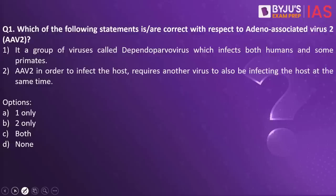Which of the following statements is correct with respect to adeno-associated virus 2? Statement one: it is a group of viruses called Dependoparvo virus which infects both humans and some primates. Statement two: AAV2, in order to infect the host, requires another virus to also be infecting the host at the same time. Which of the statements are correct?